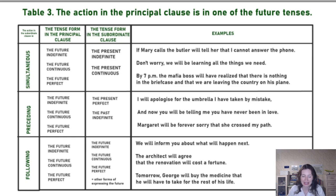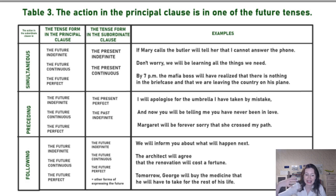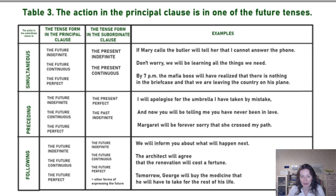The second case is when you talk in the future but then talk about something which will happen even earlier, before the future. You're going to use the present perfect and the past indefinite as the most basic tenses. You're not going to use the past perfect continuous — that would be too much.